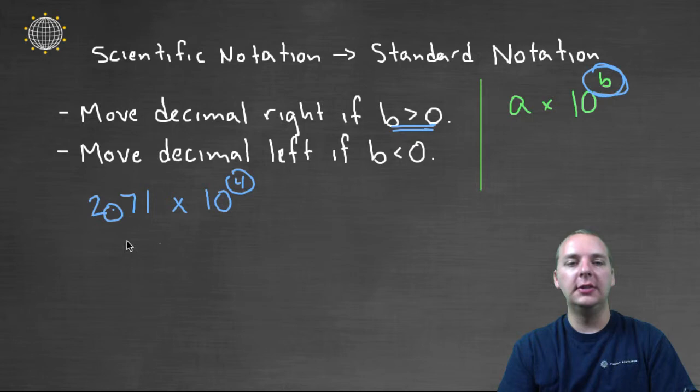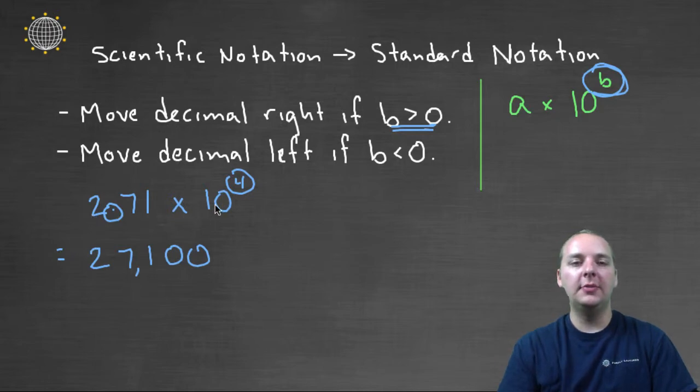So this would be 2, 7, 1, 0, 0. Move it once, twice, three times, four times. So 2.71 times 10 to the fourth is the same as 27,100.